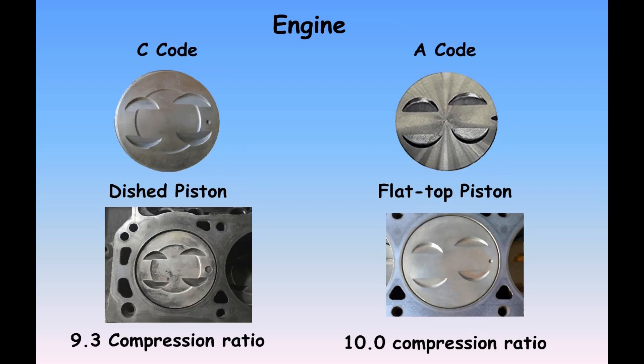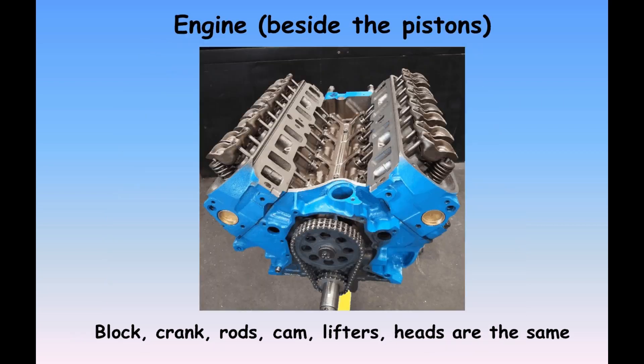The next difference, once you've got the gas going into the engine, is in the pistons themselves. The C-code two-barrel engine has a dished piston, and that dished piston ends up lowering the compression ratio — since there's more volume in the combustion chamber, it only gives you a 9.3 to 1 compression ratio, as opposed to the flat-top piston used in the A-code, which gives you a 10 to 1 compression ratio.